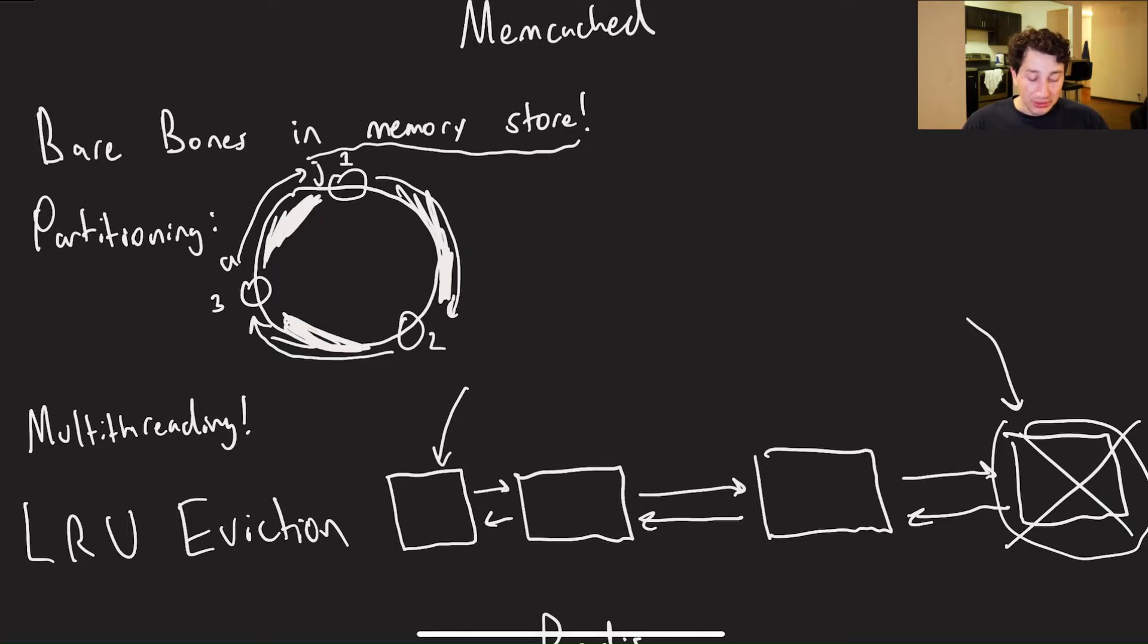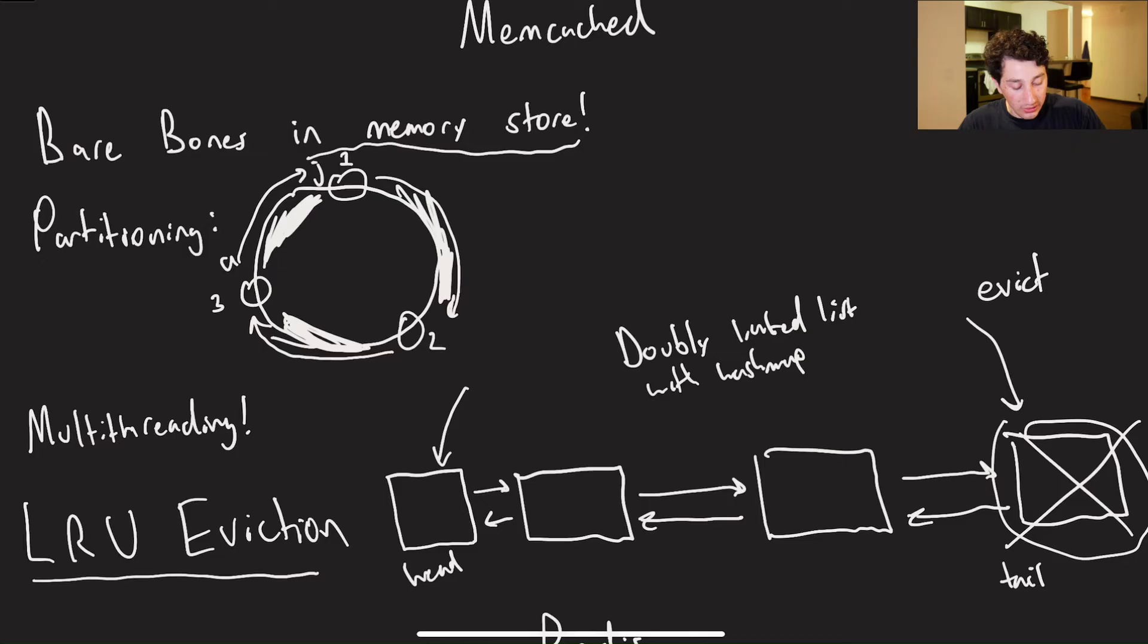Then we've also got multi-threading. Now, in theory, you would think that's not that big of a deal. Pretty much every database has multi-threading. Well, guess what? Maybe Redis doesn't. So we'll talk about that in a second. And then finally, just as a quick throwback to last video, it also does use a least recently used eviction policy. So how do we implement that? Let's remember doubly linked list with a hash map. The reason being that, let's say this is the head of the list. This is the tail. We evict from the tail. If I were to go ahead and read this node right here, then the fact that I have this hash map allows me to figure out where it is, and then move it back around to the head. Anyways, that's a bit of a tangent.